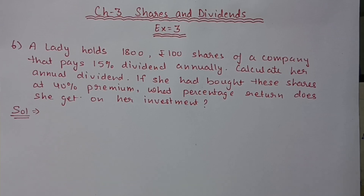Hello students, we are doing Chapter 3: Shares and Dividend, Exercise 3. In the previous video we discussed up to question number 5. Now we are starting from question number 6. A lady holds 1800 rupees 100 shares of a company that pays 15% dividend annually. Calculate her annual dividend. If she had bought these shares at 40% premium, what percentage return does she get on her investment? First, we will see what all is given in the question.